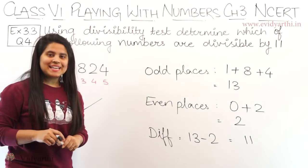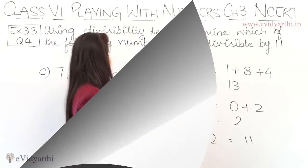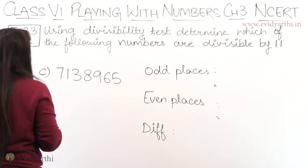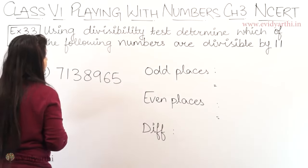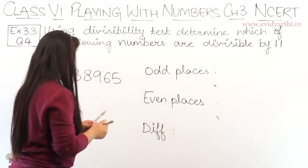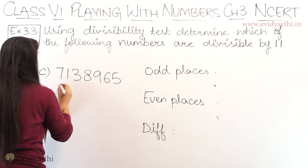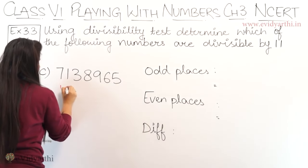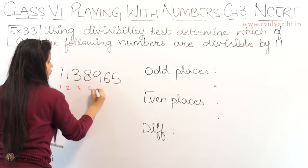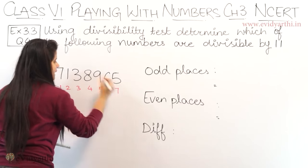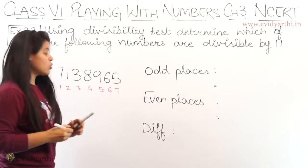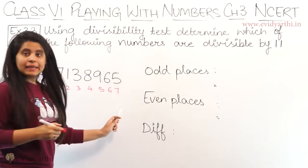Now, let's come to the C part. The number is 7, 1, 3, 8, 9, 6, 5. So, we will do the numbering — this is positions 1, 2, 3, 4, 5, 6, and 7. Here we have 7 digits.